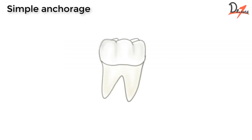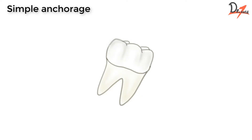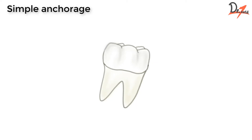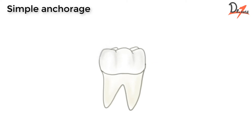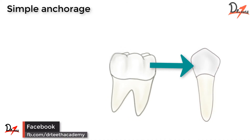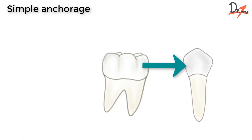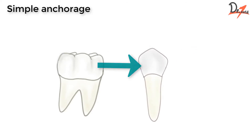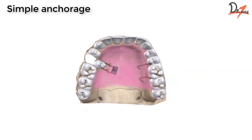Now, simple anchorage will tend to change the axial inclination of the teeth. So if we are aware that a tooth can resist tipping, we can use that in our favor, because in simple anchorage the force is such that it tends to change the axial inclination of the tooth or the teeth. Therefore, the teeth which can resist tipping can be used. You obtain simple anchorage by engaging a greater number of teeth than the ones you have to move. An example is a removable appliance that incorporates a screw — in this case, a screw for the buccal movement of a premolar that is palatally placed. Remember that the combined root surface area of the teeth forming the anchorage unit must be double that of the teeth to be moved.